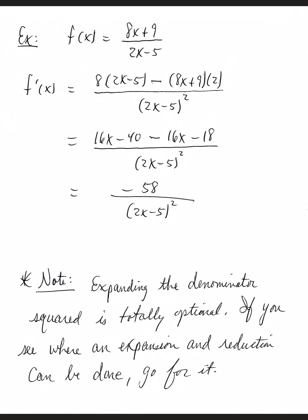I did put a note here. Expanding the denominator squared is totally optional. If you see where expanding this, and what you would do is you would write that twice, foil it out. This denominator, if you were to expand it, would be 4x squared minus 20x plus 25. If expanding it leads to canceling out something from the numerator, go for it. That's why I made that little note. If you see where an expansion and a reduction can be done, go for it. Otherwise, just leave your denominator squared, and move on to the next problem.